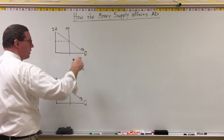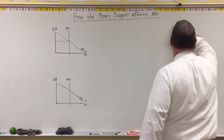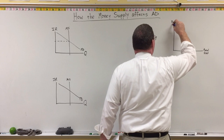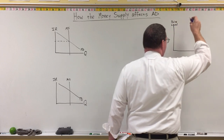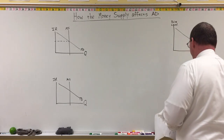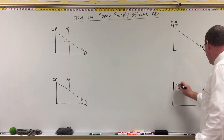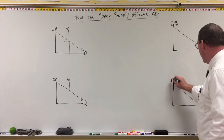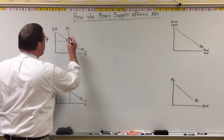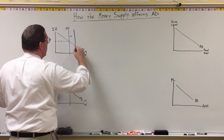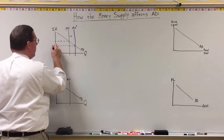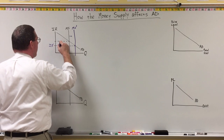What happens to aggregate demand? I'm going to put an aggregate market graph over here with real GDP on the horizontal axis and price level on the vertical axis. I'm just going to draw an aggregate demand curve. When the money supply increases, that's a rightward shift of the money supply curve in the money market — this is money supply prime — and you can see it now intersects with money demand at a lower interest rate, IR prime.